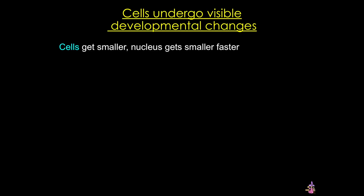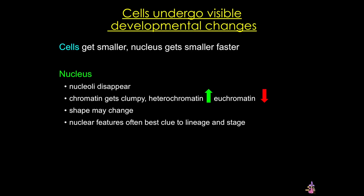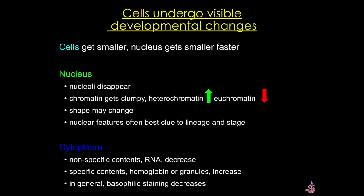Some of these changes are fairly easy to see under the light microscope. Cells tend to get smaller over time and so does the nucleus, but it gets smaller more quickly. The nucleus can undergo some dramatic changes — nucleoli are prominent in the early stages but then they disappear, and there are chromatin changes. The shape of the nucleus can also undergo very dramatic changes, becoming multi-lobed in the granulocytes and being lost in red blood cells. The cytoplasm also changes: RNA decreases while specific contents such as granules or hemoglobin increase, so the cytoplasm typically changes from a dark or blue color to clear or red in mature blood cells. All of these changes together can help you tell the different lineages apart and distinguish the different stages within those lineages.